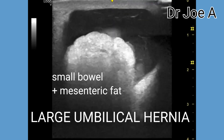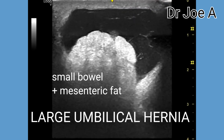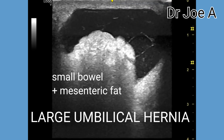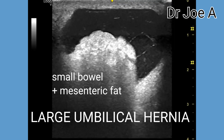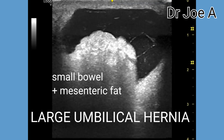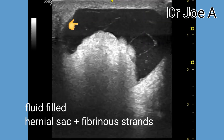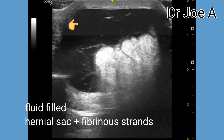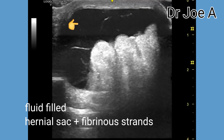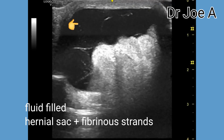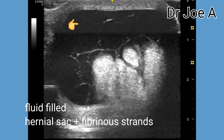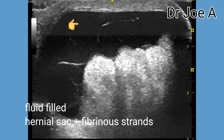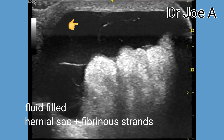In this case the patient was an adult male with a large umbilical hernia. In adults, umbilical hernias may develop due to factors such as obesity, pregnancy, heavy lifting, or previous abdominal surgery.